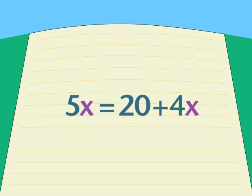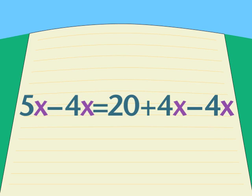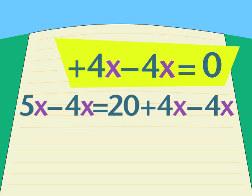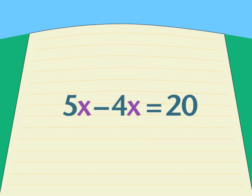What about the x's? I have a positive 4x to move, so I subtract 4x from both sides. And it turns up as negative 4x on the left.